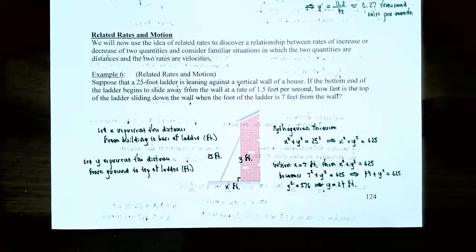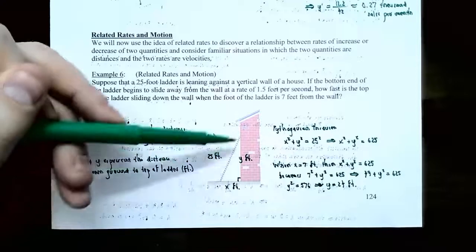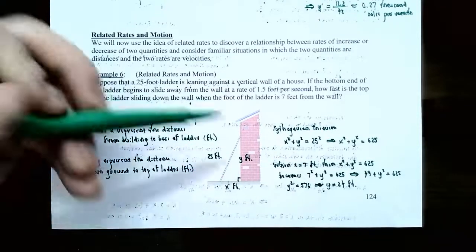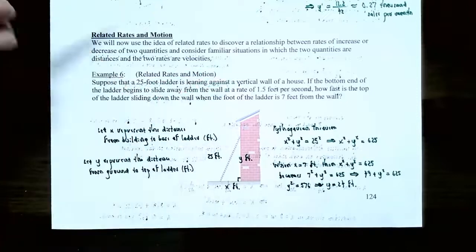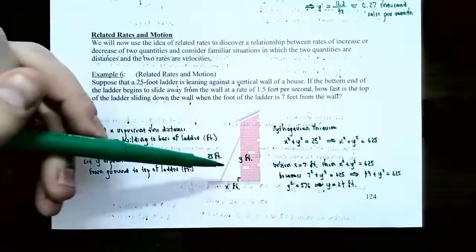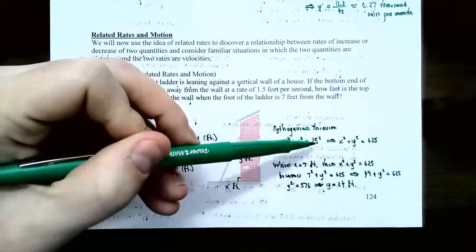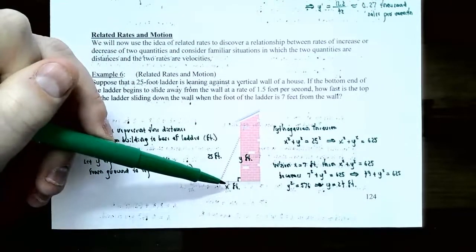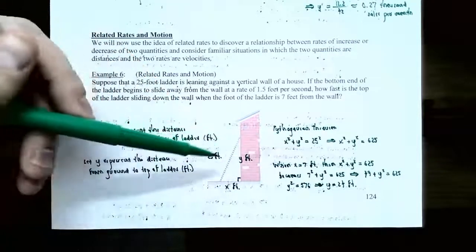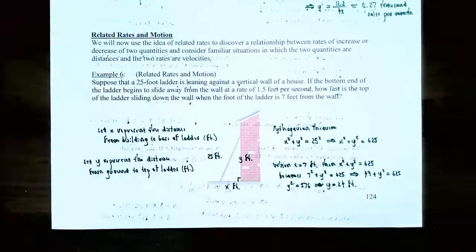Now we find the equation that relates all the variables using a geometric formula. X represents one side of a right triangle formed by the ladder, the building, and the ground, while Y represents the other side. Since the building and ground form a right angle, we use the Pythagorean theorem. The hypotenuse is 25, so X squared plus Y squared equals 25 squared, or X squared plus Y squared equals 625.